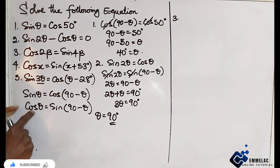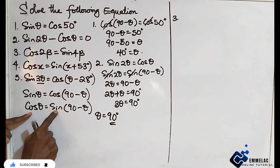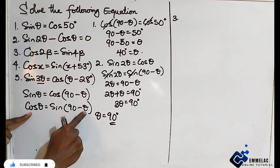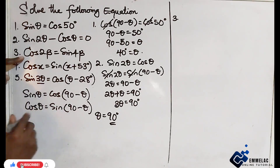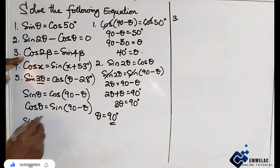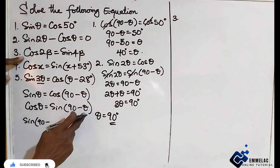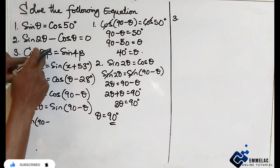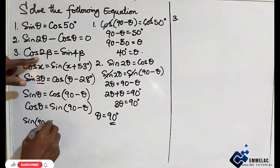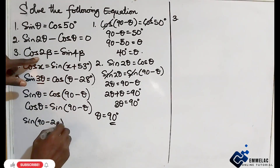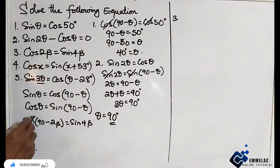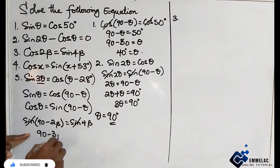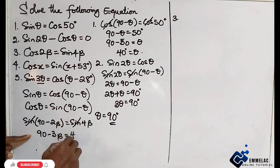Choosing cos, we use cos theta equals sine of 90 minus theta, replacing theta with 2 beta. So we get sine of 90 minus 2 beta equals sine 4 beta. Eliminating sine, we equate: 90 minus 2 beta equals 4 beta.